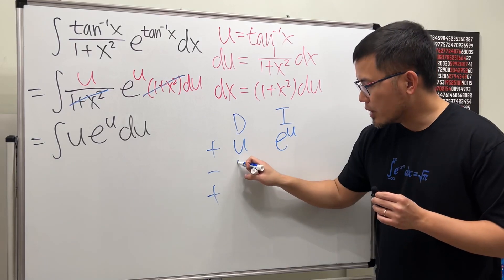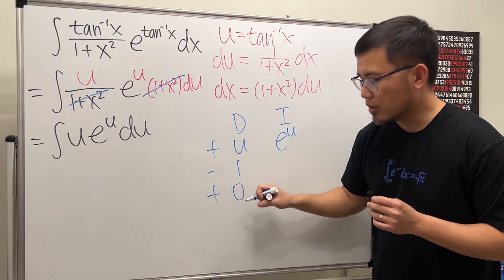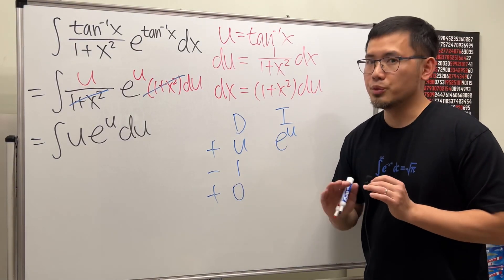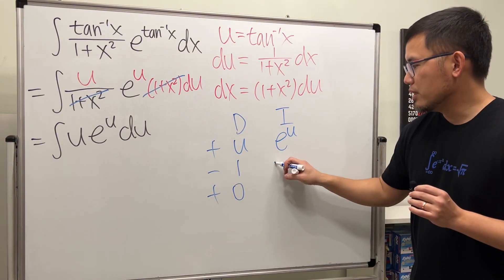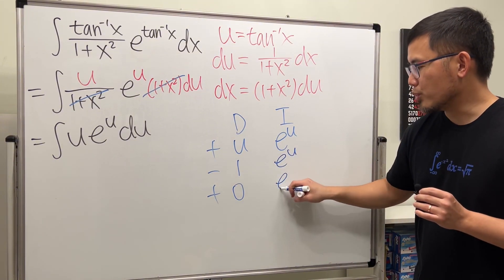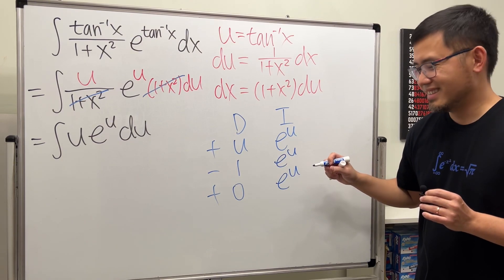This is the case that we should differentiate the u and then integrate e to the u. When we differentiate the u one time we get one, and then do it again we get zero. When we see the zero in the D column we stop.